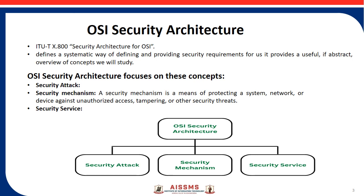To effectively assess the security needs of an organization and to evaluate and choose various security products and policies, the manager responsible for security needs some systematic way of defining the requirements for security or characterizing approaches to satisfying those requirements. This is difficult enough in a centralized data processing environment with local and wide area networks. ITU recommendation X.800, Security Architecture for OSI, defines such a systematic way of defining and providing security requirements.